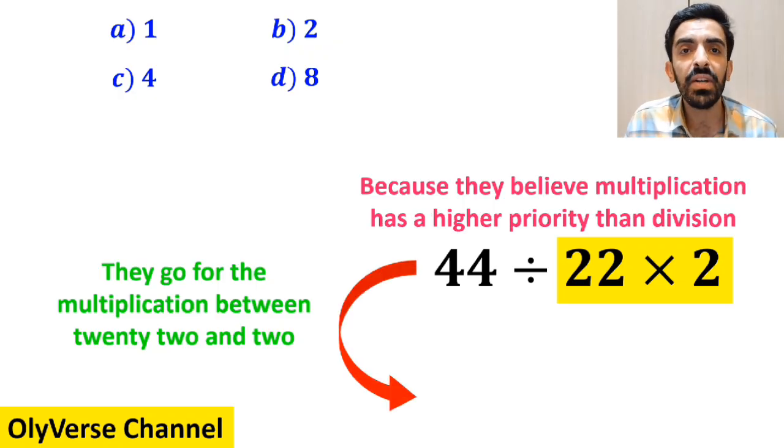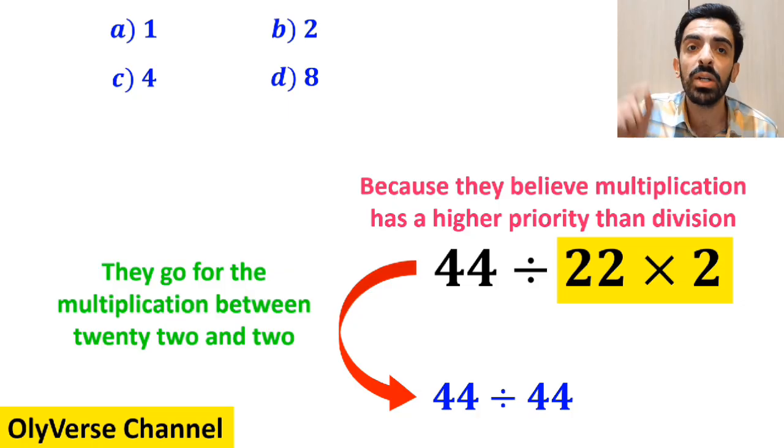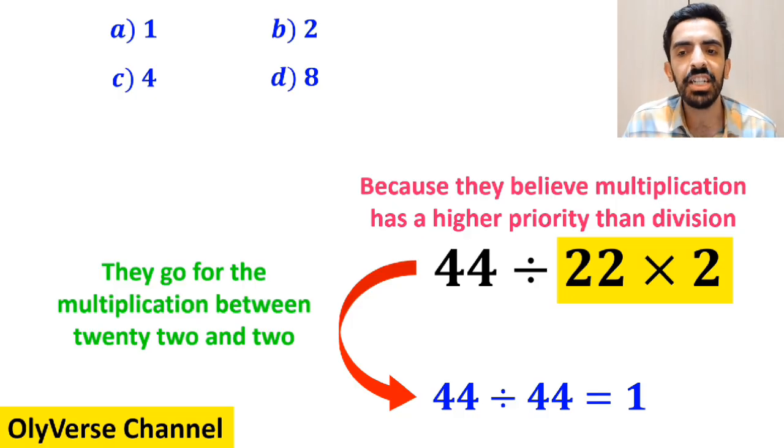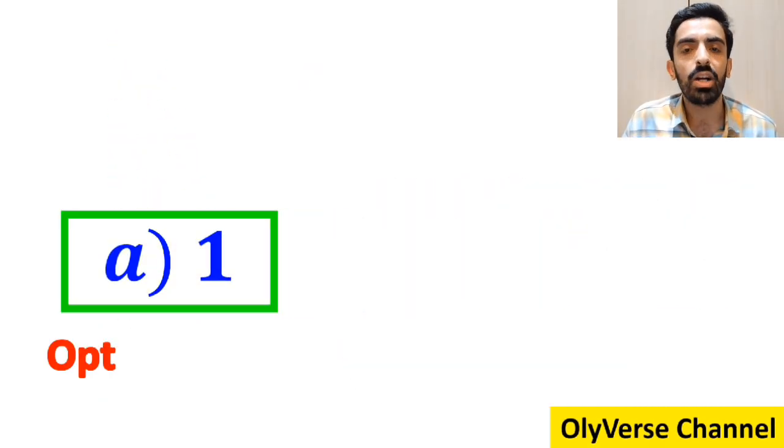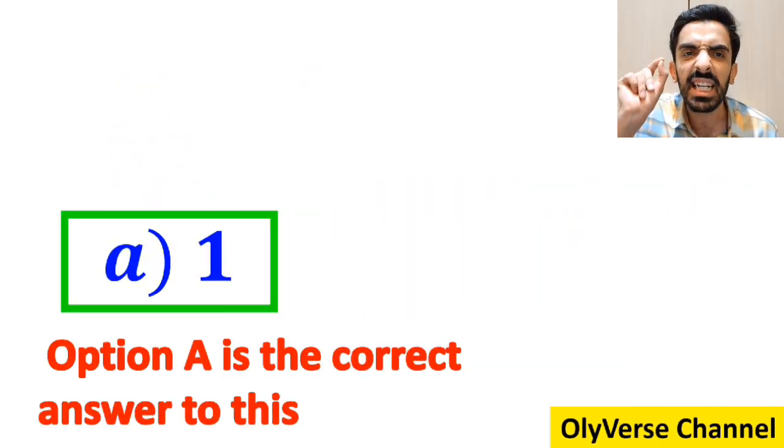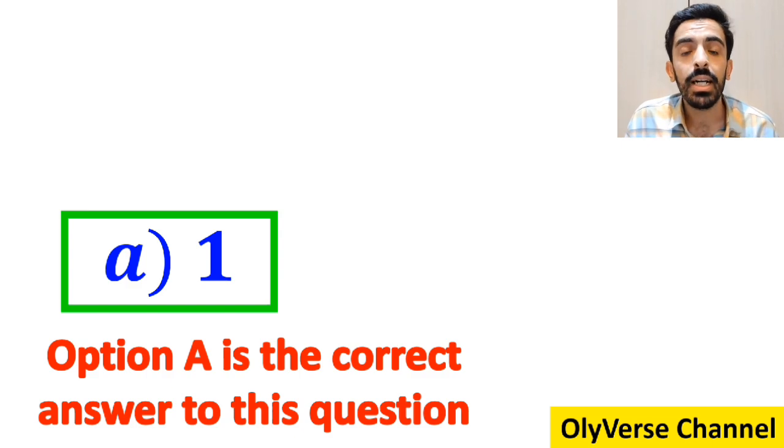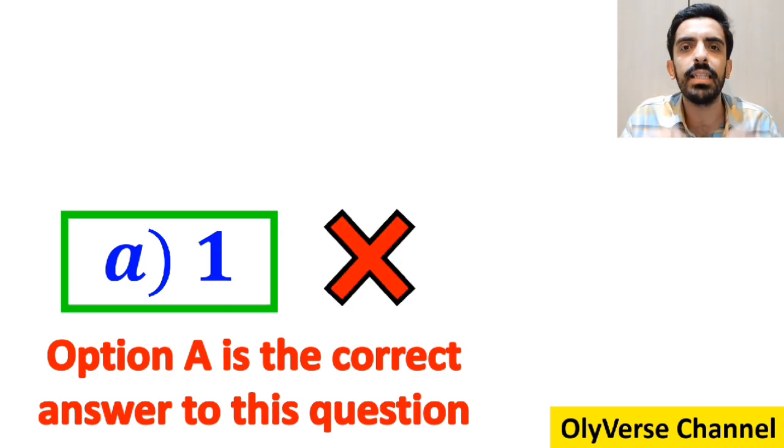So they simplify this expression and rewrite it as 44 divided by 44 which finally gives them the answer 1. Then, without any hesitation, they conclude that the correct answer to this question must be option A. However, this answer is absolutely incorrect.